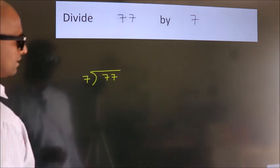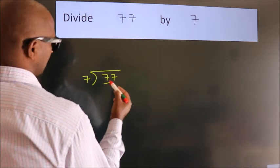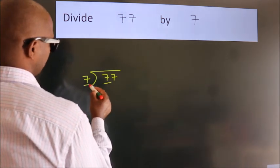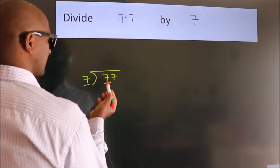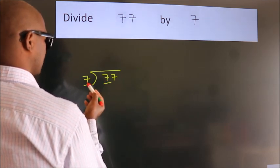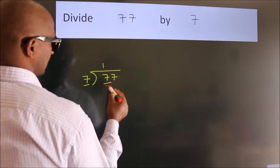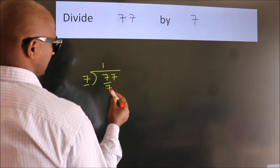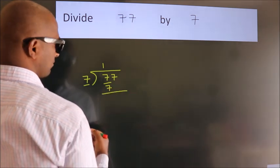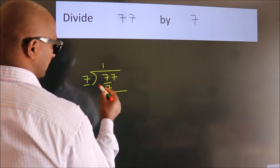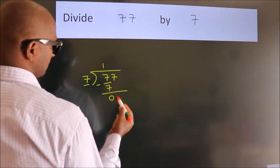Next, here we have 7, and here 7. When do we get 7? In the 7 times table — 7 once is 7. Now we should subtract. We get 0.